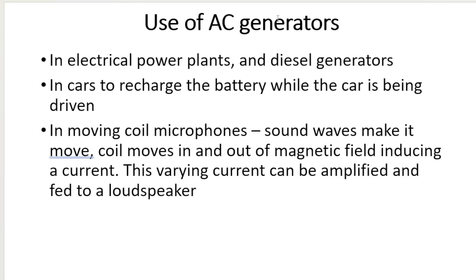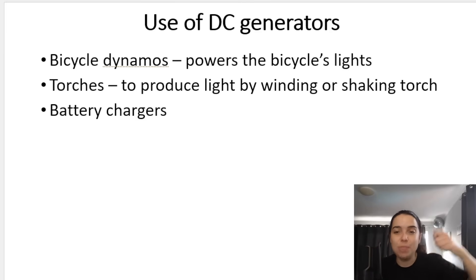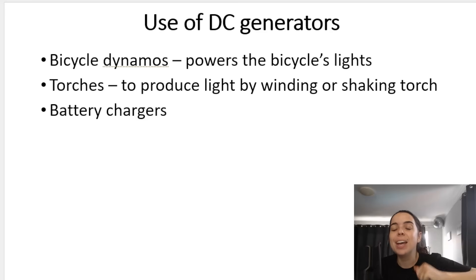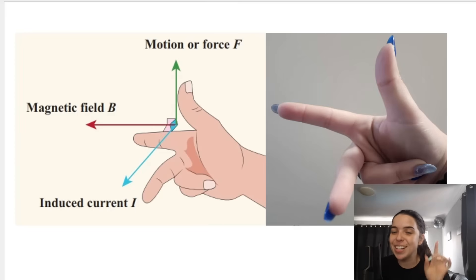AC generators are used in electrical power plants, diesel generators, in cars to recharge the battery while driving, and in moving coil microphones. DC generators are used in bicycle dynamos to power the bicycle's lights, in wind-up torches where mechanical energy is converted into electrical energy, and in battery chargers. In videos coming up, we'll be learning how to use the right-hand rule to determine the direction of induced current.